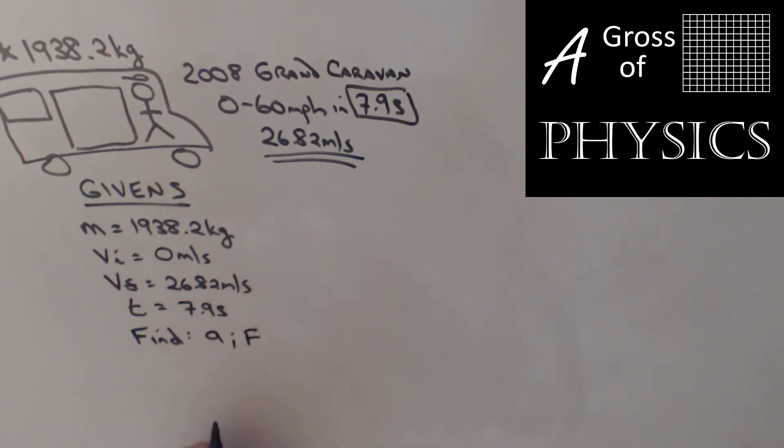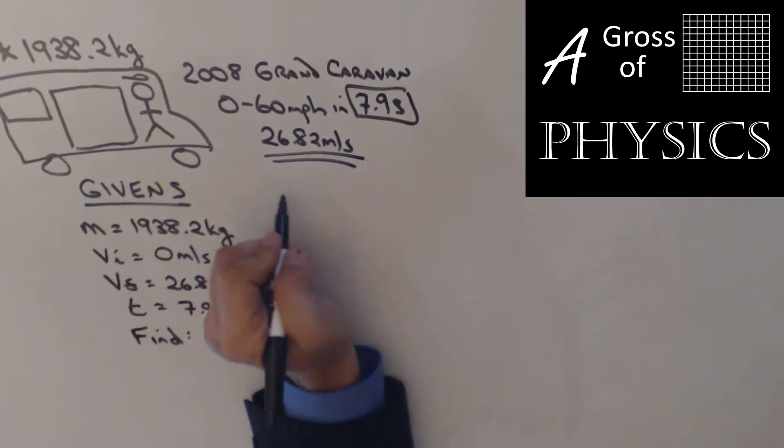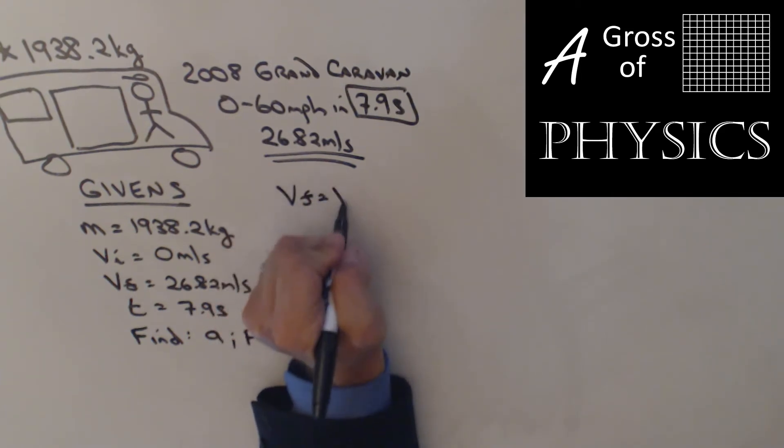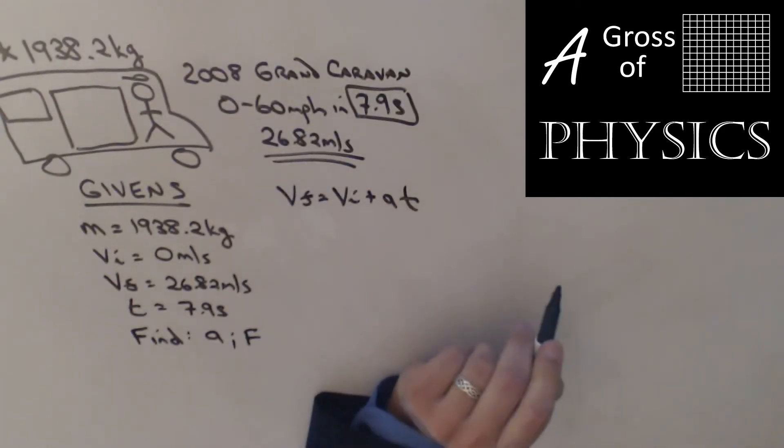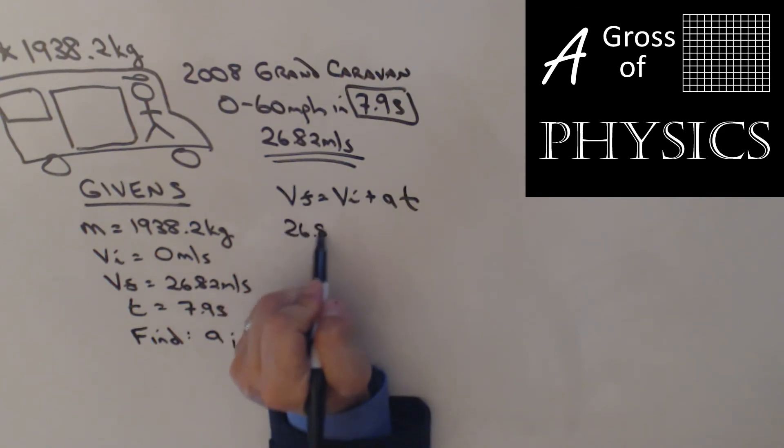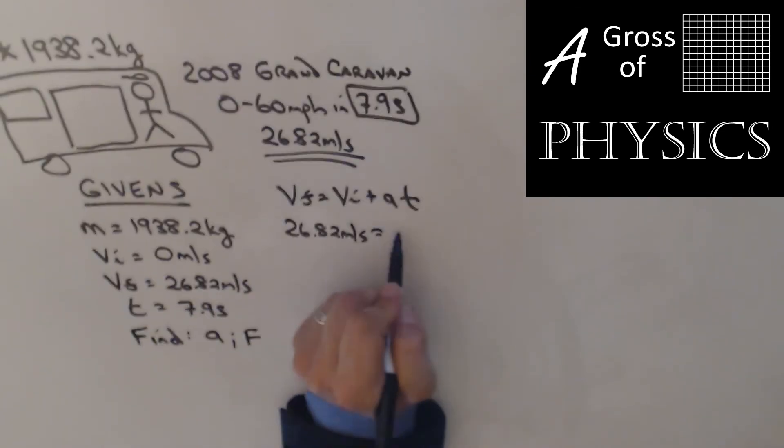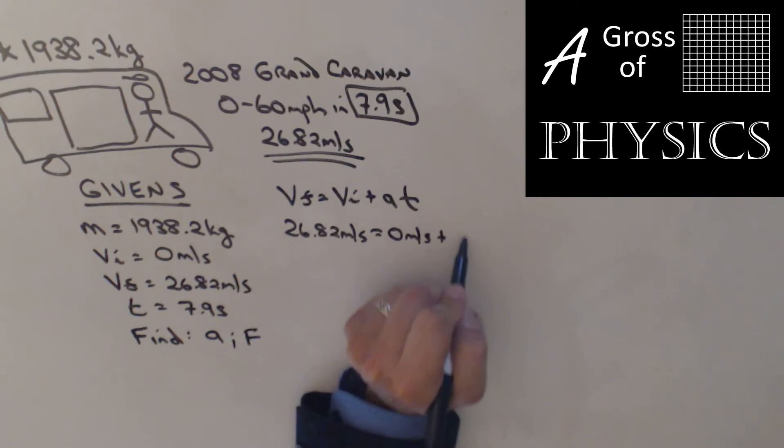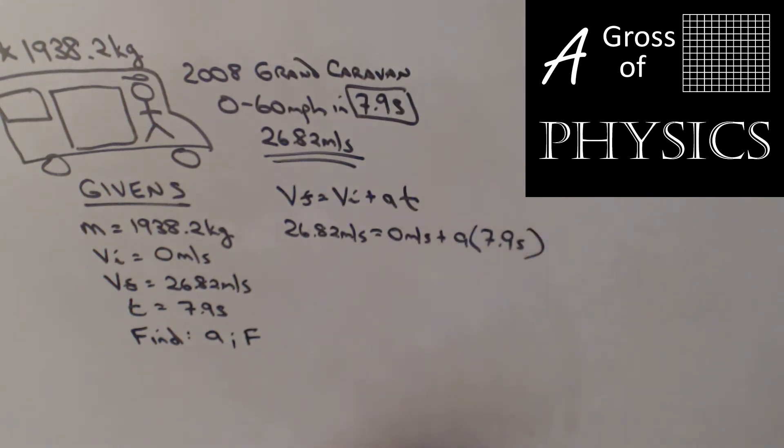Now, if I find the acceleration from this, I'm going to do VF equals VI plus AT. I'm going to calculate 26.82 equals zero plus A times 7.9 seconds. And what I'll do now is take 26.82 divided by 7.9, and I get 3.4 meters per second squared for the acceleration.